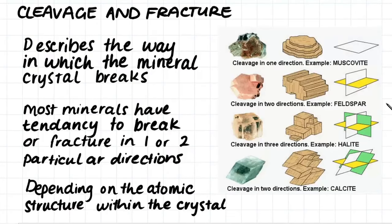Another property we look at when we're trying to classify minerals is the cleavage or fracture of the mineral. The cleavage and fracture describes the way in which the mineral crystal will break. Most minerals have a tendency to break or fracture in one or two particular directions, and these directions depend on the atomic structure within the crystal. Because it depends on the atomic structure within the crystal, all minerals of one particular type will always fracture in this way, and it is a pretty consistent and reliable property to look for when we're trying to classify minerals.